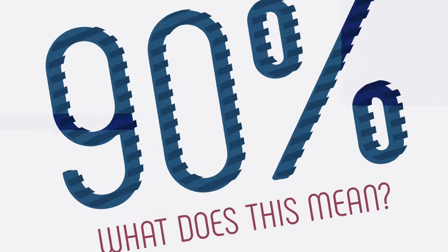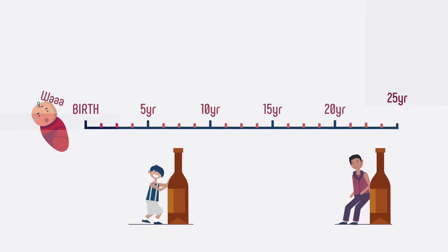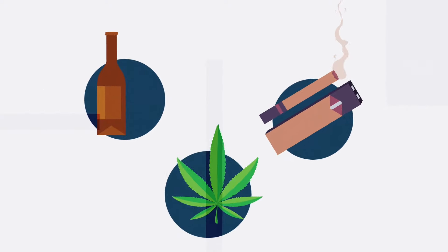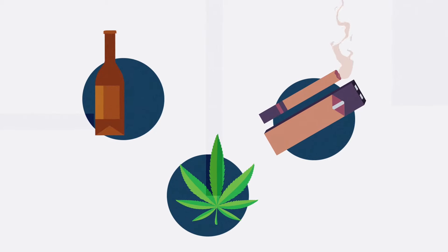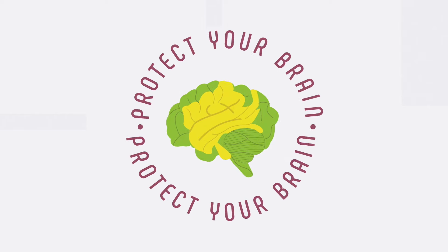So what does this mean? Prevention is about delaying the onset of first use or pushing it back as long as possible, whether alcohol, tobacco, or marijuana, the most commonly used substances among teens. Protecting the brain during this period of development is an important part of prevention.